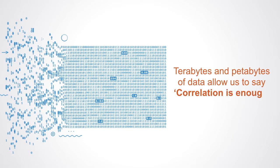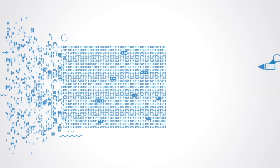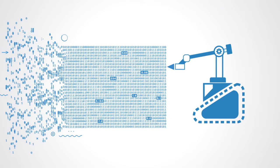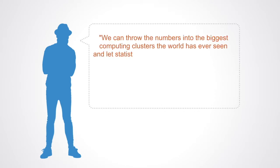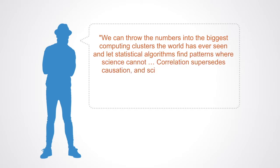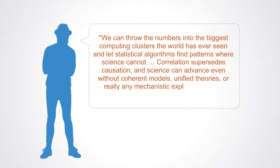We can simply analyze the data without hypotheses about what it might show. As he writes, we can throw the numbers into the biggest computing cluster the world has ever seen and let statistical algorithms find patterns where science could not. Correlation supersedes causation and science can advance even without coherent models, unified theories, or really any mechanistic explanation at all. There's no reason to cling to old ways.